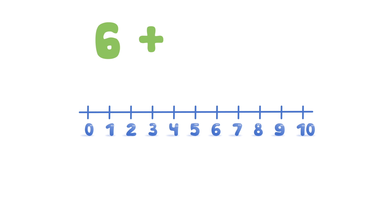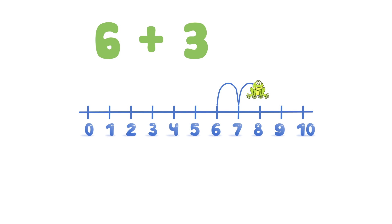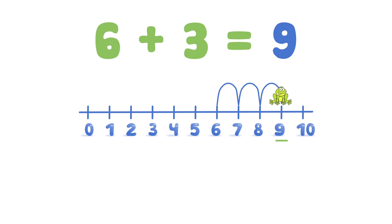Six plus three. The frog starts at six and then moves three places to the right. The frog lands on nine, so six plus three equals nine.